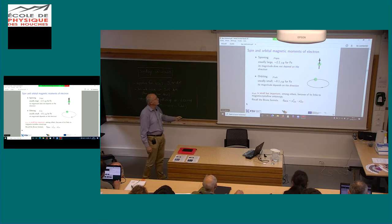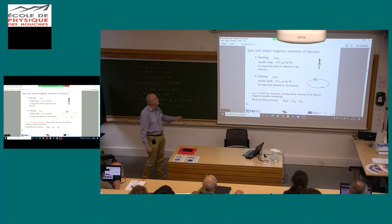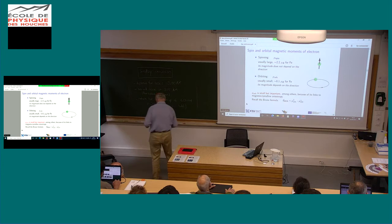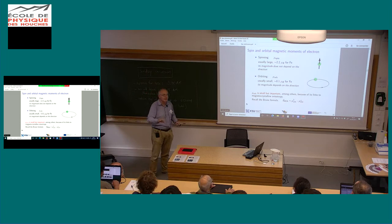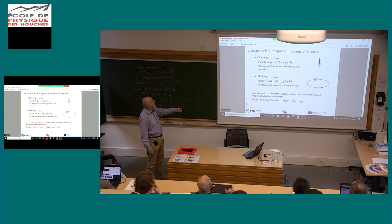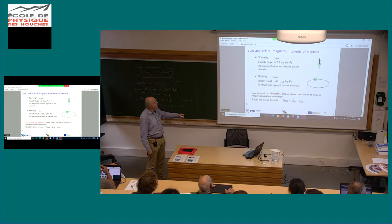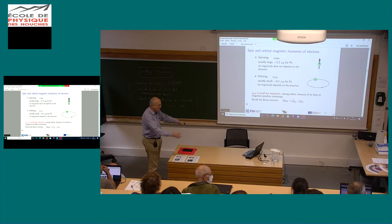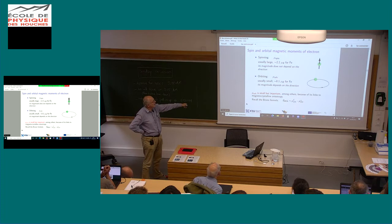A short introduction to magnetism. Electrons can get magnetic moments either by spinning — the spin magnetic moment, which you can imagine as the electron rotating about its axis (though it's a quantum object). For 3D transition metals like iron it's about 2 Bohr magnetons, and its magnitude does not depend on the direction of the magnetic moment. Or there's another source of magnetic moment: the orbital moment, which comes from the electron running around neighboring atoms. This magnetic moment is rather small, and its magnitude depends on the direction because, running around, the electron collides with other atoms, which affects the magnitude of the orbital component.